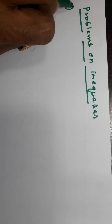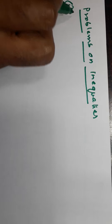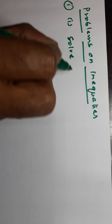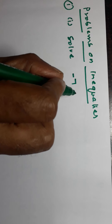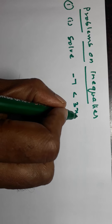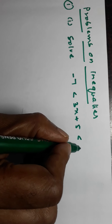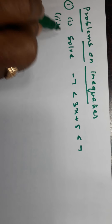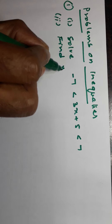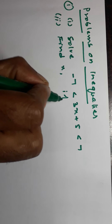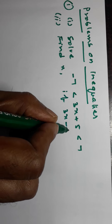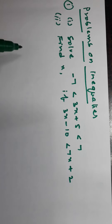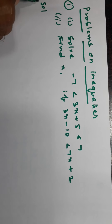First problem: Solve -7 < 3x + 5 < 7. Second problem: Find x if 3x - 10 < 7x + 2.